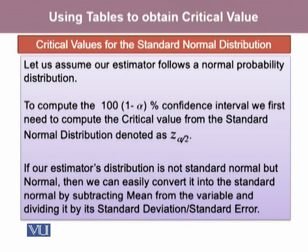Assume our estimator follows a normal probability distribution. To compute the 100(1 − α)% confidence interval, we first need to compute the critical value for the standard normal distribution, denoted as z_{α/2}. If the estimator's distribution is not standard normal but is normal, we can convert it to the standard normal variable by subtracting the mean and dividing by the standard deviation, or for an estimator, subtracting the estimator's mean and dividing by its standard error.